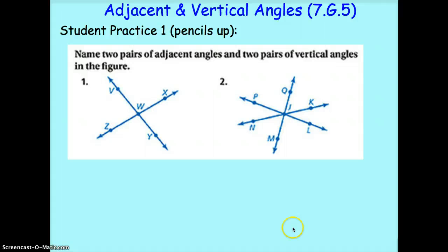Okay, welcome back. For your adjacent angles, remember they have to have the same vertex and they need to be touching. So you could have used X, W, V and V, W, Z. Or V, W, Z and Z, W, Y. Or Z, W, Y and Y, W, X. Any of those would be adjacent, any of those that are touching.